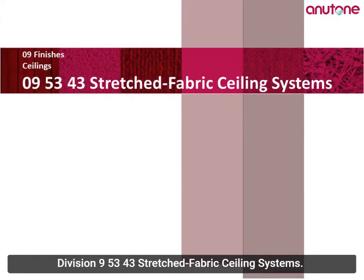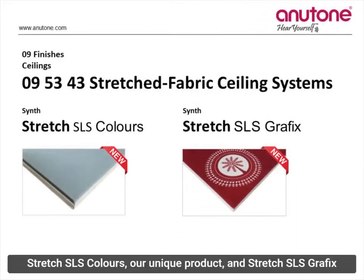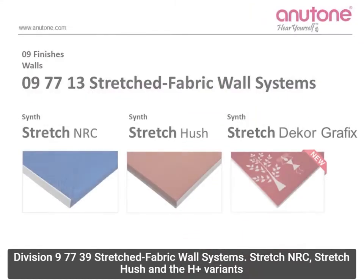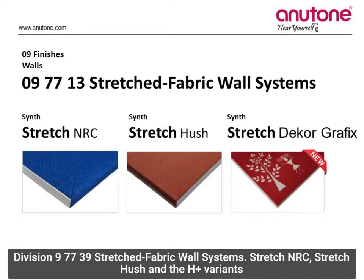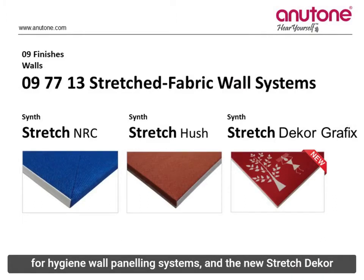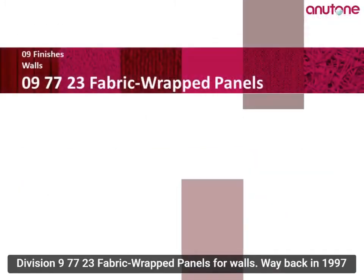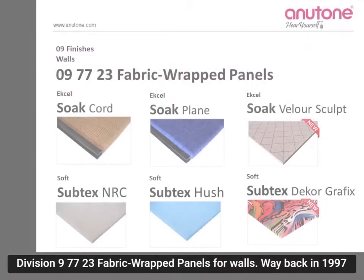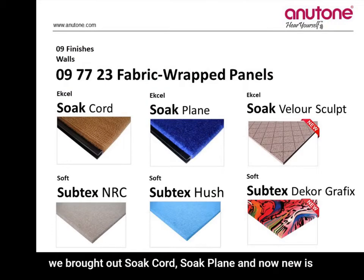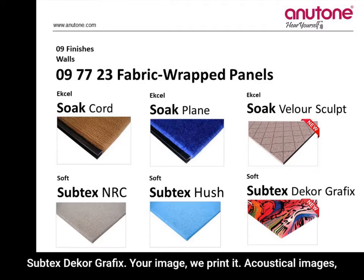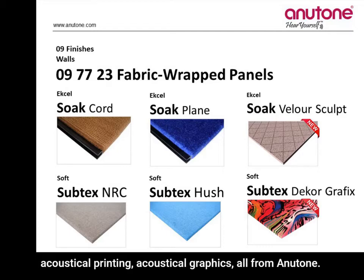Division 9, 5343 — Stretched Fabric Ceiling Systems: Stretch SLS Colors is a unique product, and Stretch SLS Graphics is a new and very unique product as well. Division 9, 7713 — Stretched Fabric Wall Systems: Stretch NRC, Stretch Hush, the H-Plus Variations for Hygiene Wall Paneling Systems, and the new Stretch Decor Graphics — whatever image you give us, we can print it from Anutone. Division 9, 7723 — Fabric Wrapped Panels for Walls: way back in 1997, we brought out Soak Cod, Soak Plane, and now new is Soak Velour Sculpt; Subtext NRC, Subtext Hush, Subtext Deco Graphics — your image, we print it. Acoustical Images, Acoustical Printing, Acoustical Graphics from Anutone.